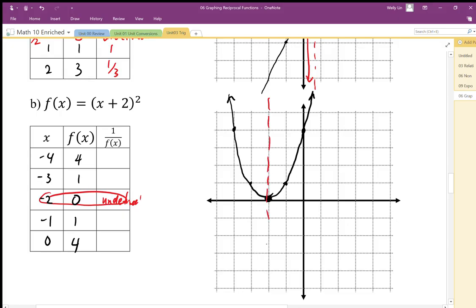Now notice that this graph is entirely on the positive side of the x-axis. So it's going to be all positive y. So the reciprocals are all positive. So when I sketch this in, there's my invariant point. This is going to go towards positive infinity on this side.